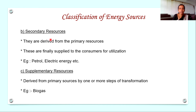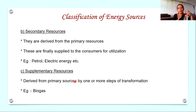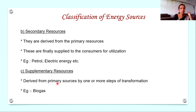The second type is secondary resources. Secondary resources are obtained from primary resources by some transformation — these are the form which can be finally supplied to consumers. Examples are petrol and electrical energy. The last one is supplementary resources. Supplementary resources are also derived from primary resources, but by a number of stages of continuous transformation. An example is biogas, which is obtained from biomass materials — a supplementary resource obtained from primary resources through multiple stages of transformation.